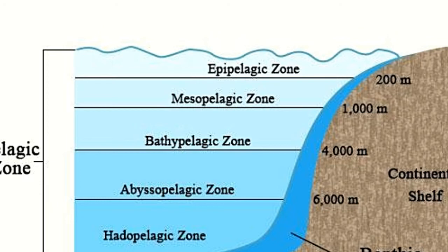As the depth within this zone increases, physical properties such as temperature, pressure, oxygen level, and sunlight availability all decrease considerably. Therefore, the pelagic zone is further divided into a number of subzones: the epipelagic zone (up to 200 meters deep), the mesopelagic zone (200 to 1,000 meters deep), the bathypelagic zone (1,000 to 4,000 meters deep), the abyssopelagic zone (4,000 to 6,000 meters deep), and the hadopelagic zone (below 6,000 meters deep).